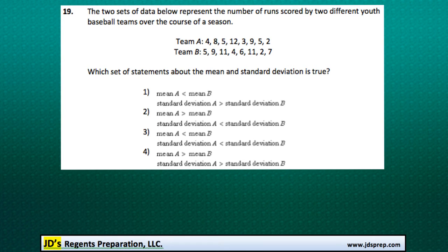This is problem number 19 from the August 2015 Algebra Regents exam. In this question we're given two sets of data with a series of numbers representing two baseball team scores, or actually the number of runs scored over the course of a season.